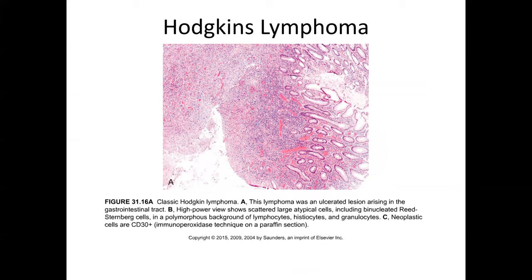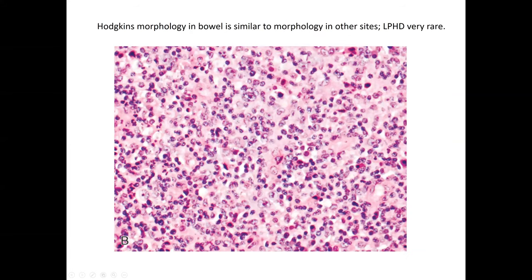Turning to some of the lymphoproliferative disorders, Hodgkin's disease is an uncommon but occasionally encountered lymphomatous lesion in the GI tract. It can present as a mucosal ulceration, giving the appearance of a potentially reactive-appearing stroma. However, at higher magnification, seeing the mixed nature of the infiltrate along with the characteristic Reed-Sternberg or Reed-Sternberg variant cells should allow identification. Lymphocyte-predominant Hodgkin's disease would be extraordinarily rare in the colon.